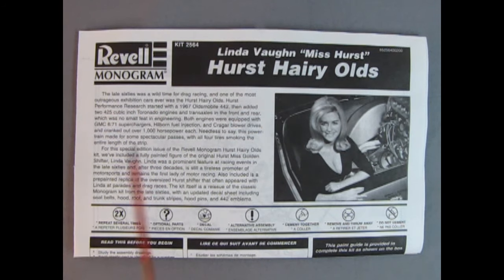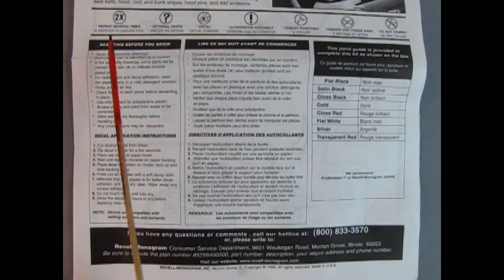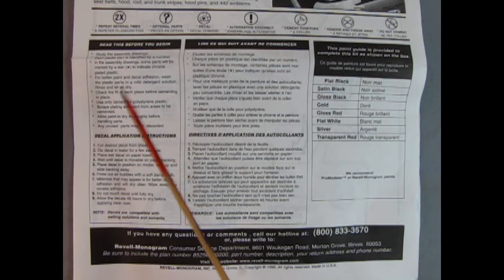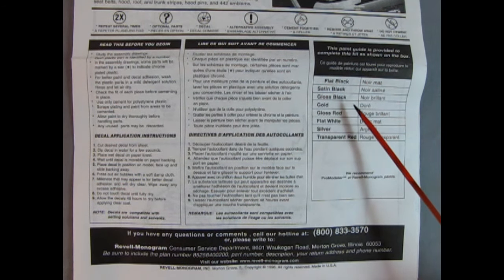Here's the instruction sheet for the Linda Vaughn Miss Hurst Hurst Hairy Olds Model Kit. There's a nice photograph of Linda Vaughn with a big write-up which I'll put in the description below. Underneath the photograph we have the symbols you'll see as you build your model, the read this before you begin section, decal application instructions, and the paint callout chart which calls for flat black, satin black, gloss black, gold, gloss red, flat white, silver, and transparent red.